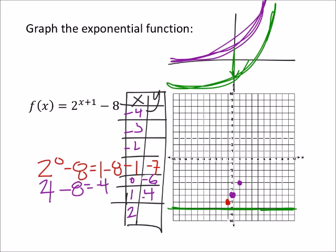And then I've got 2, so 2 to the power of 2 plus 1 is 3. 2 to the power of 3 is 8. 8 minus 8 is 0.